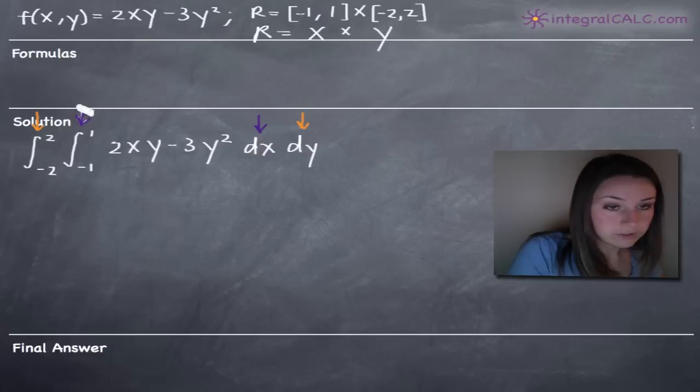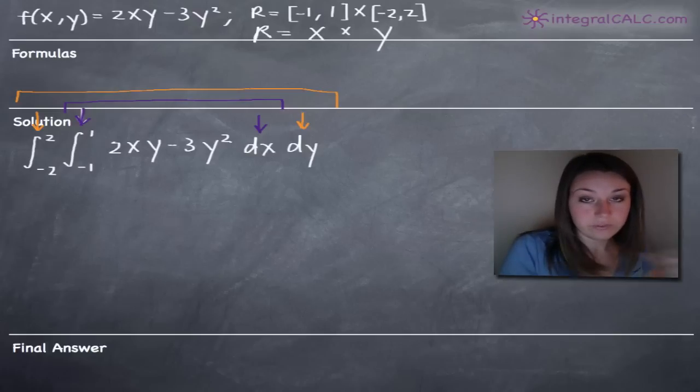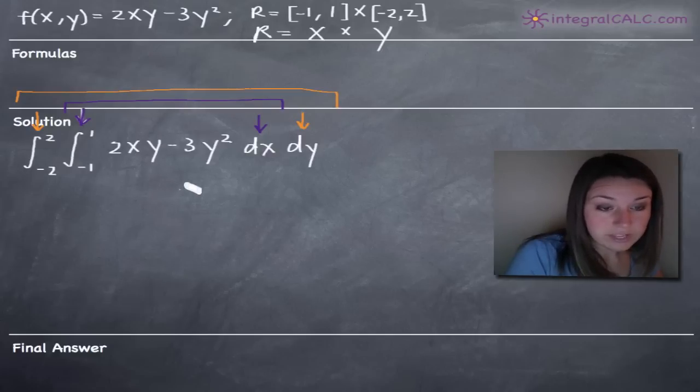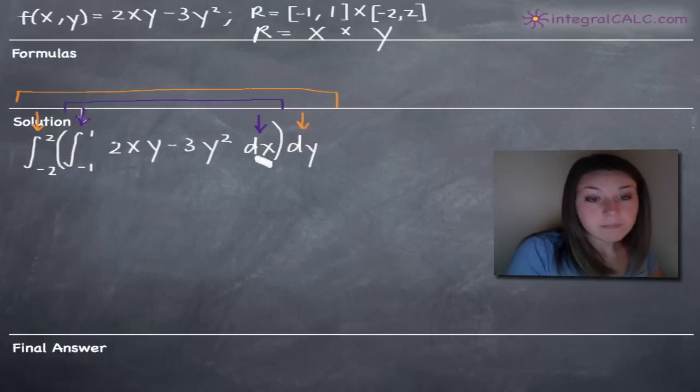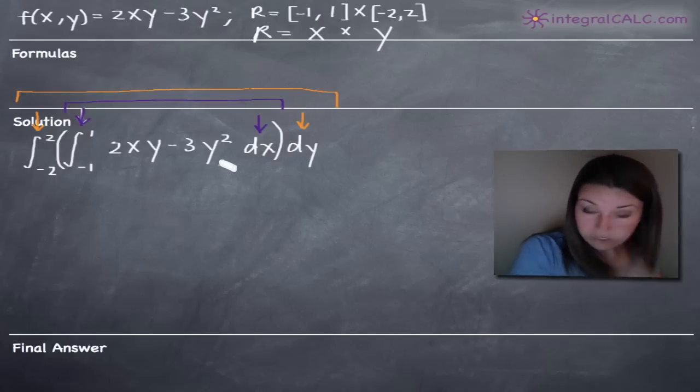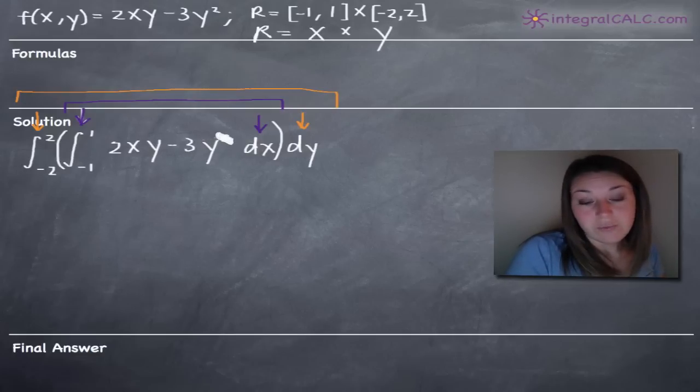We're only going to be looking at this part first. We're going to finish this part, and when we're done, we'll do the outer integral. You always want to work from the inside out. We're going to be integrating with respect to dx first, which means we're going to be holding y as a constant. We treat y as a constant just like it were a number like 2 or 3.